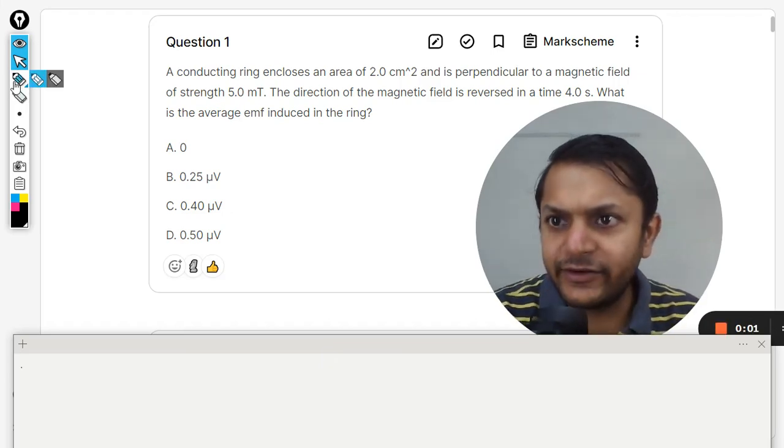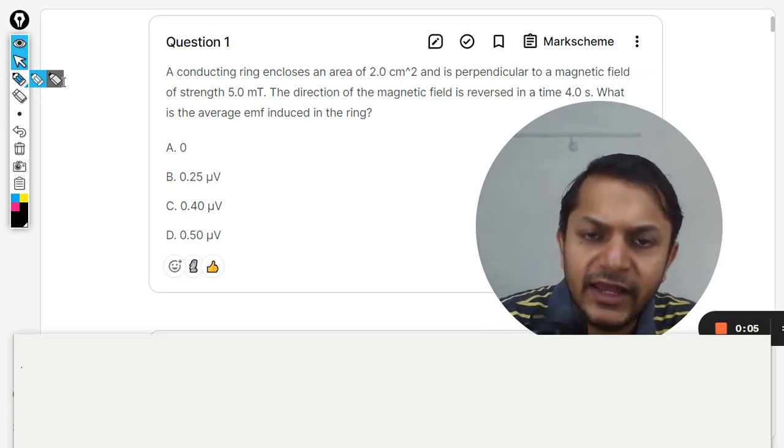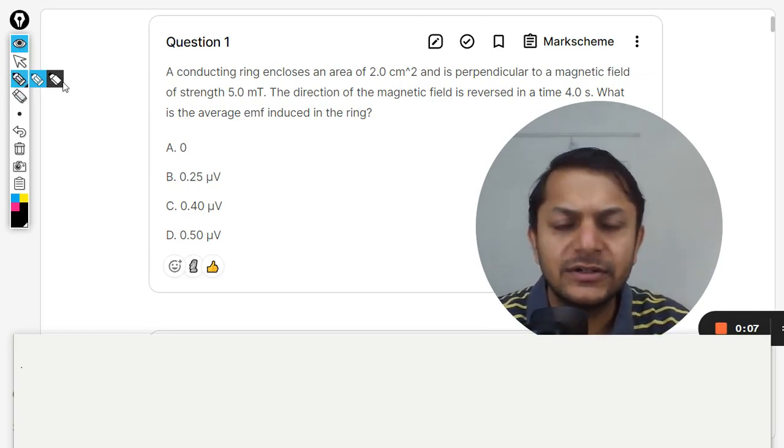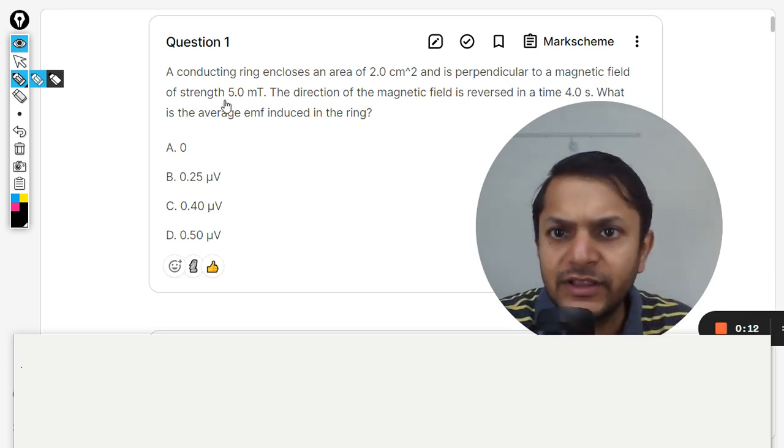Okay dear students, let us see what is there in this question. Now a conducting ring encloses an area of 2 centimeter square and is perpendicular to a magnetic field of strength 5 milli tesla.